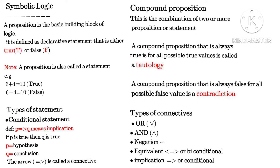Starting with the conditional statement, because it is the building block of all other types of statements. It is defined as 'p implies q.' The symbol separating p and q is called a connective, and 'p implies q' itself is called an implication. Here, p represents a hypothesis and q represents a conclusion. So it is an implication — p implies q — and the symbol between them is called a connective.